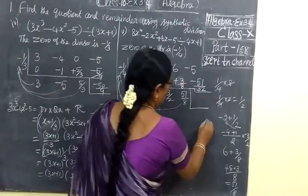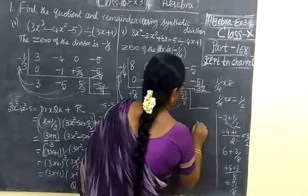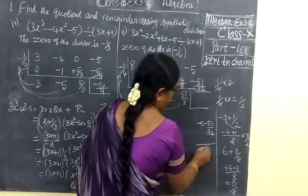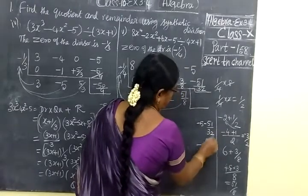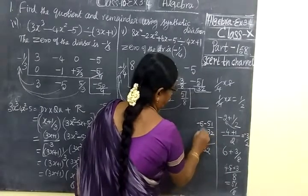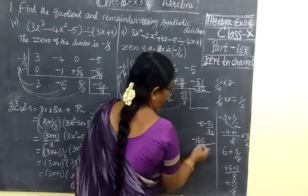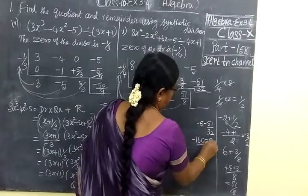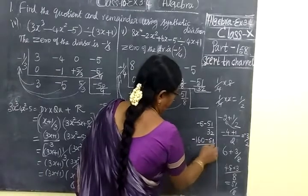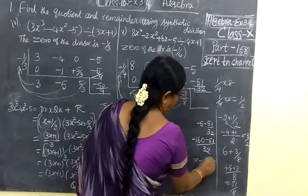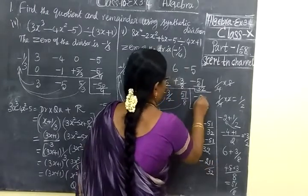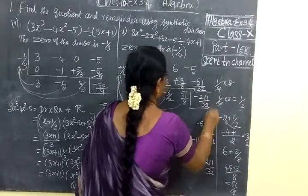Simplify this: minus 5 minus 51 by 32. LCM is 32. Cross multiply. 5 times 32 is 160, then 51. Both are minus means add: 160 plus 51 is minus 211. So minus 211 by 32.